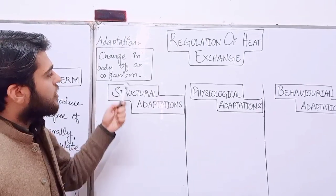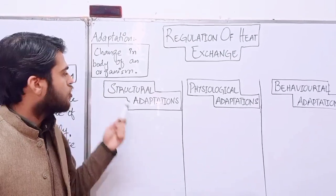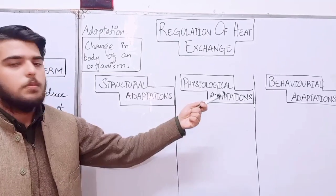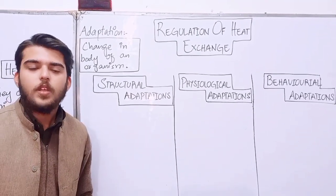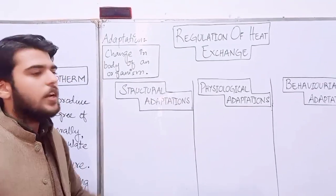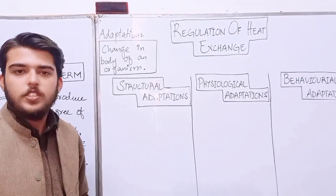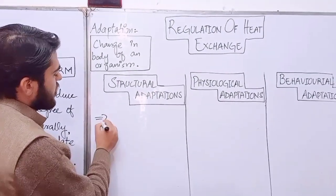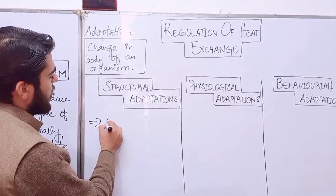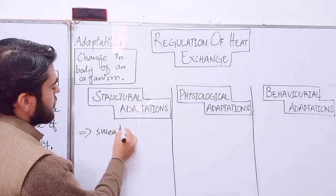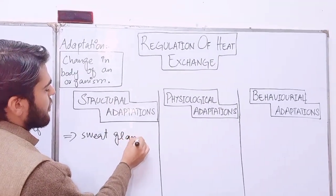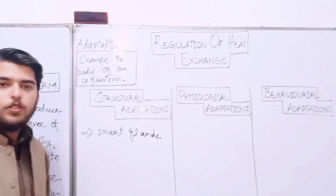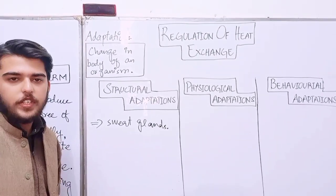Adaptation is divided into three types: structural adaptations, physiological adaptations, and behavioral adaptations. First, we will discuss structural adaptations. Structural adaptations include our sweat glands, which produce sweat and create a cooling effect.